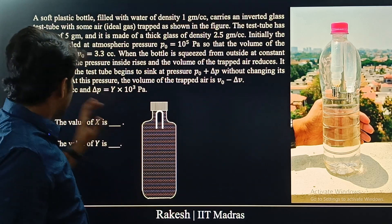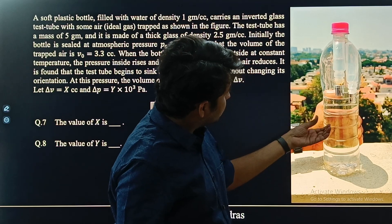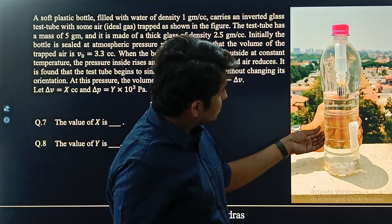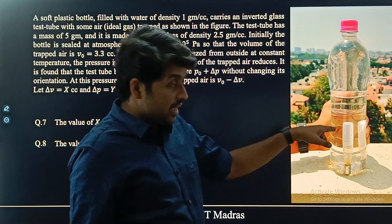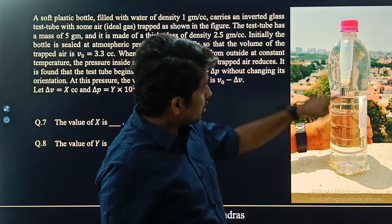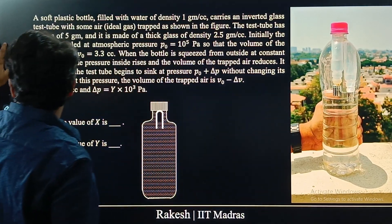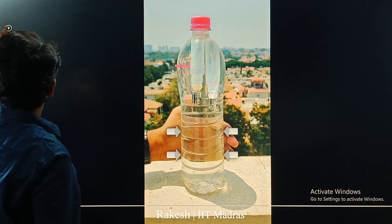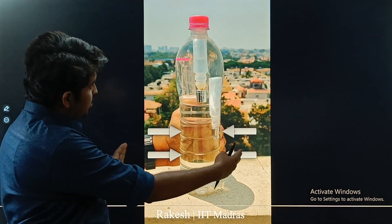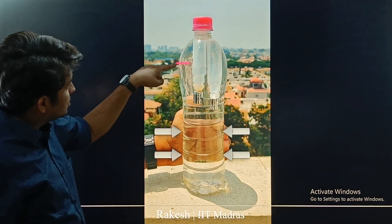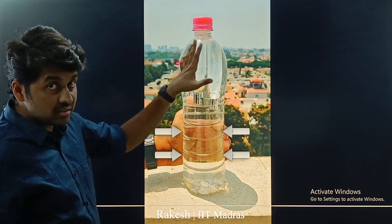Let us look at the demo. We have the inverted test tube and we are increasing the pressure. At a particular pressure, the test tube goes down. The arrows represent the force applied — so pressure is increasing. The water level inside the test tube is rising, meaning the volume of air inside is decreasing.